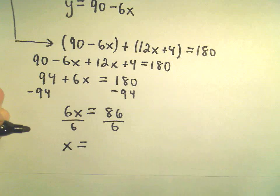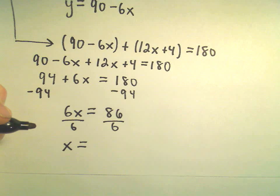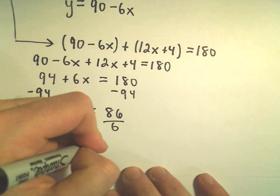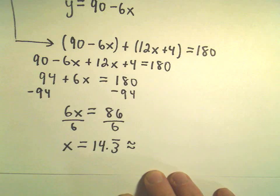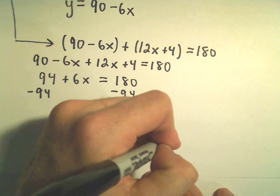We'll get x equals, let's see here, so 86 divided by 6, I'm getting 14.3 repeating, and I think I'm just going to round this off to 14.3.